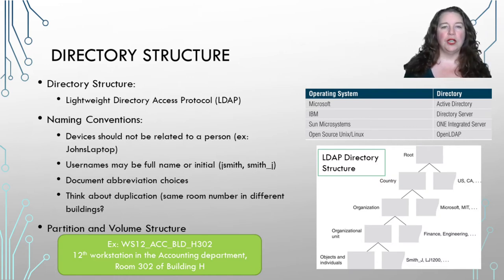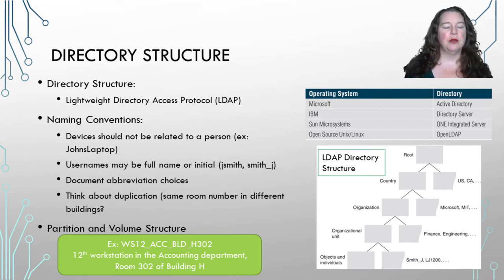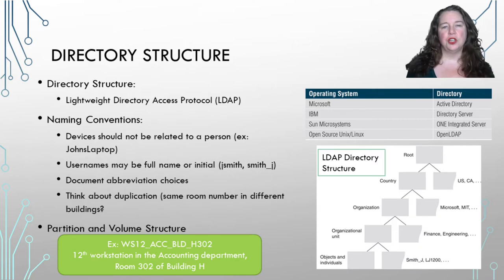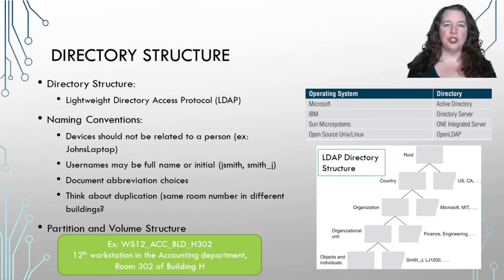For usernames, you can use full names or initials — just remember there could always be duplication, so be aware of that. If you want to abbreviate things such as department names like accounting versus HR, or have workstations numbered, think about how to prevent duplications and make identification useful. Don't just call things one, two, three, four, five — that won't help you understand what's going on. Think about your naming conventions in your directory structure.